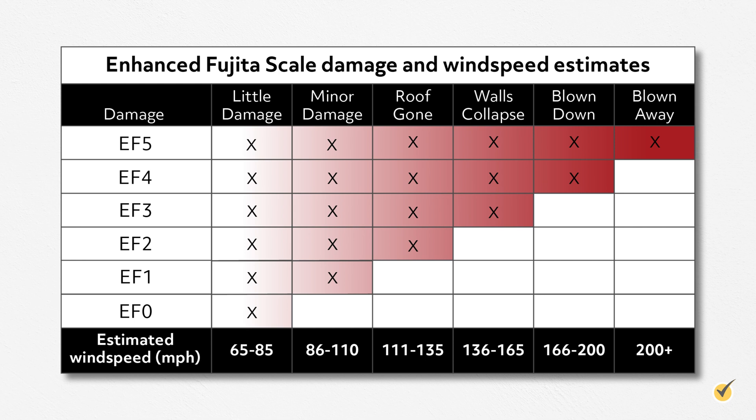The EF ratings for tornadoes are assigned rough estimates for wind speed, but are not rated by their wind speed. EF0 tornadoes do light damage, while EF5 tornadoes can do incredible damage, like we saw in Greensburg, Kansas. Kansas is a part of an area of the U.S. known as Tornado Alley, which we'll get to in a moment.